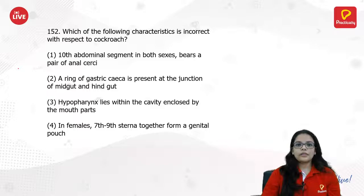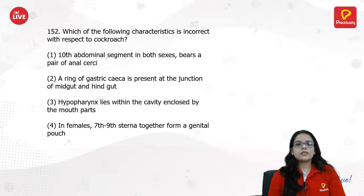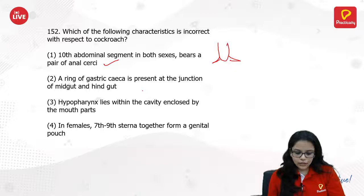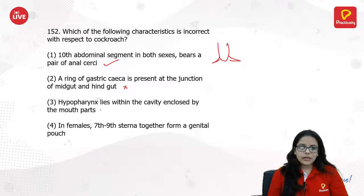Which of the following characteristics is incorrect with respect to cockroach? The tenth abdominal segment in both sexes bears a pair of anal cerci. The ring of gastric caeca is present at the junction of mid gut and hind gut — this is incorrect, I don't think it is at that junction. Female seventh and eighth sternites together form a genital pouch. The answer is two.